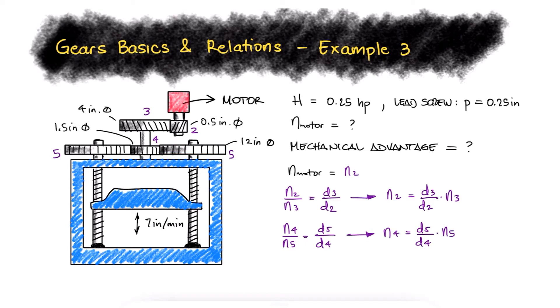Since gears 5 are rotating with their lead screws and we know that the press head, which is the nut around those lead screws, is moving at 7 inches per minute, we know that gear 5 is rotating at 28 revolutions per minute.